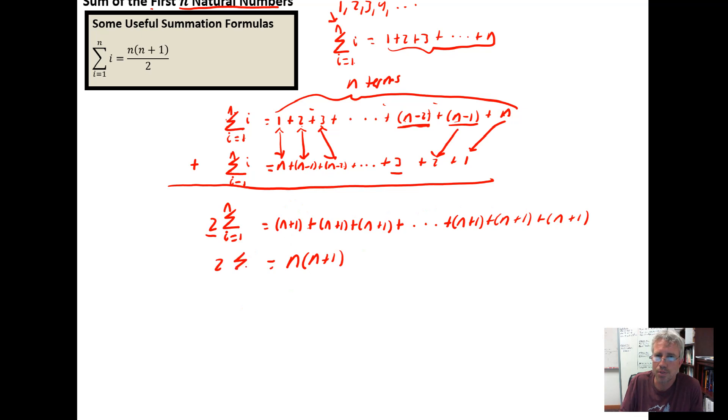And this is 2 times the sum from i, I left the i off of there, i equal 1 to n of, it's the sum of the i's. And then to get the summation by itself, which is what we have here, we just multiply both sides of this by a half. And that will give us 2 divided by 2 is 1. So 1 times the summation is the sum from i equal 1 to n of i, which equals the n times the n plus 1 all over the 2, which is one possible derivation of the summation formula.